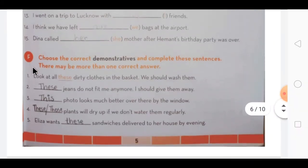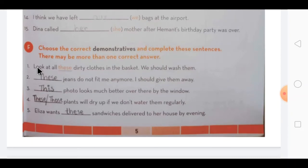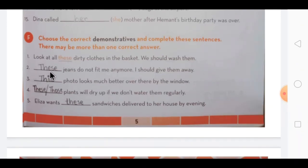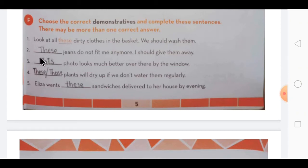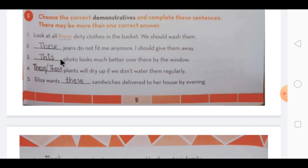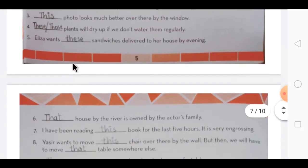Now next exercise F, in that, demonstrative related, which I have explained earlier - this, that, these, those. So now, depending on the sentence dear children, you have to think which is related to the sentence. Whatever is said in it, are you talking about things near you or far things. According to that, you have to put the demonstrative words. In that, first one is already been done. Second one, dash jeans. Jeans is a plural form, so we use these. And it is near you, so we are using the word these over here. Then the third one, dash photo. Photo is singular, so this or that will come. Looks much better over there by the window. Means it is beside your window, so we are using the word this. Now, in some places both words can be used because it is not specified whether you are near that or you are far away from that. So according to that, you have to complete this exercise.